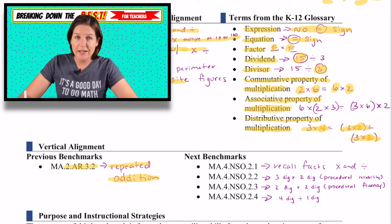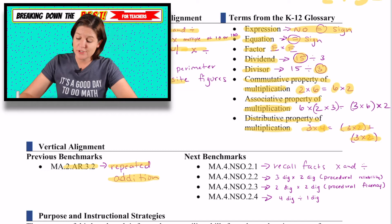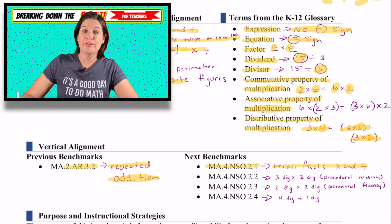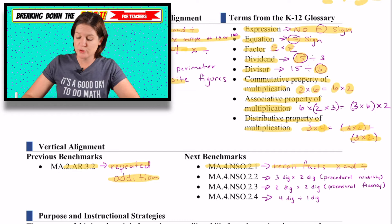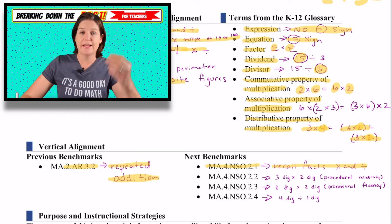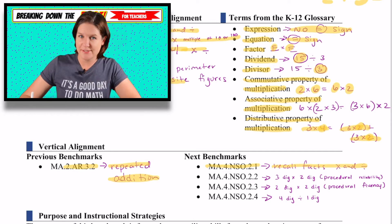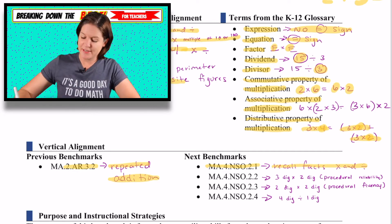NSO.2.1 is where they can recall their facts, multiplying and dividing fluently or with automaticity, I think they say.